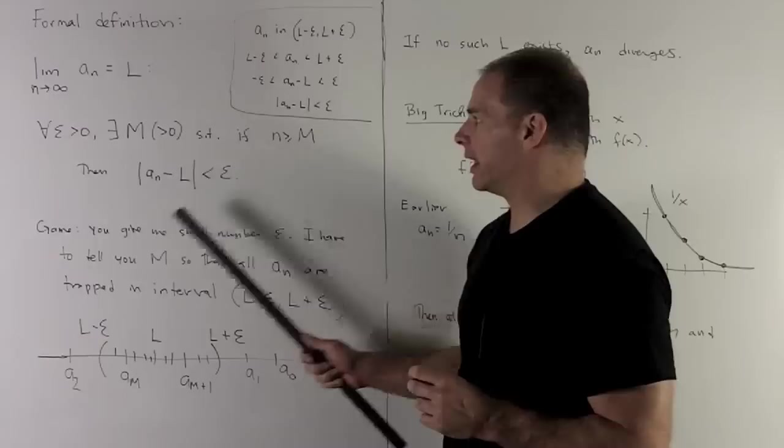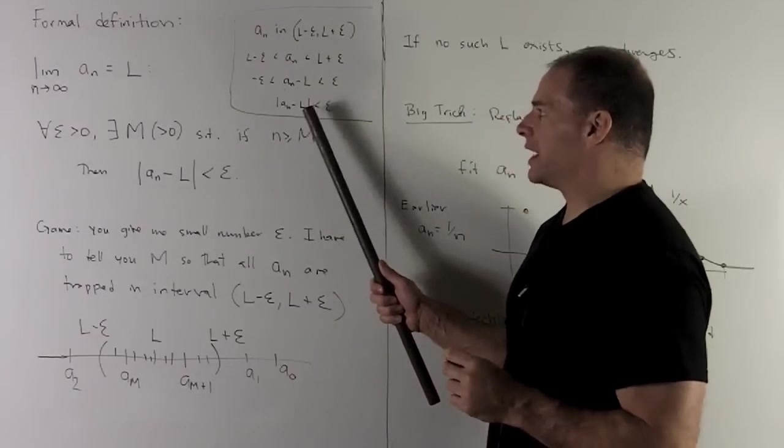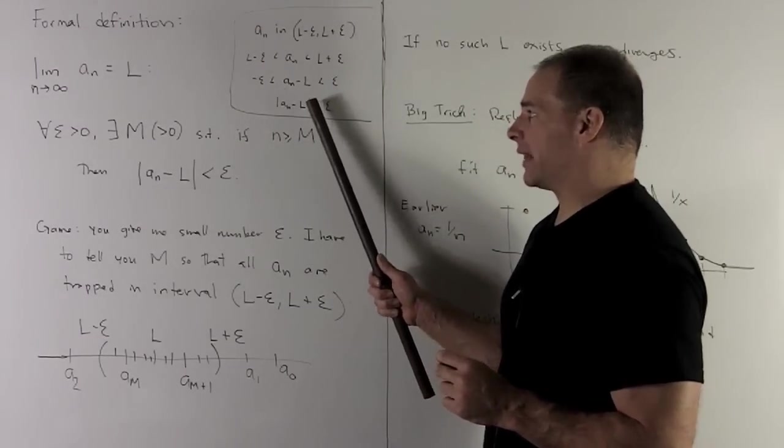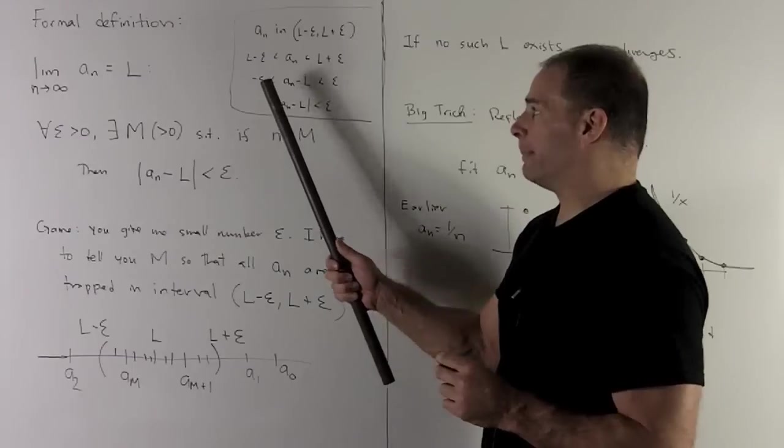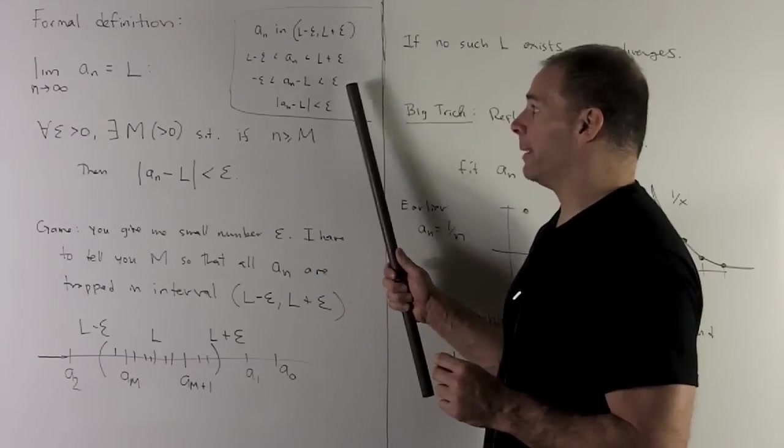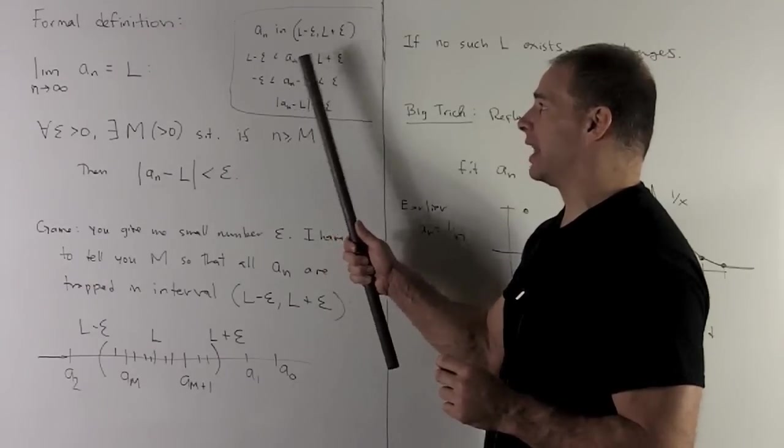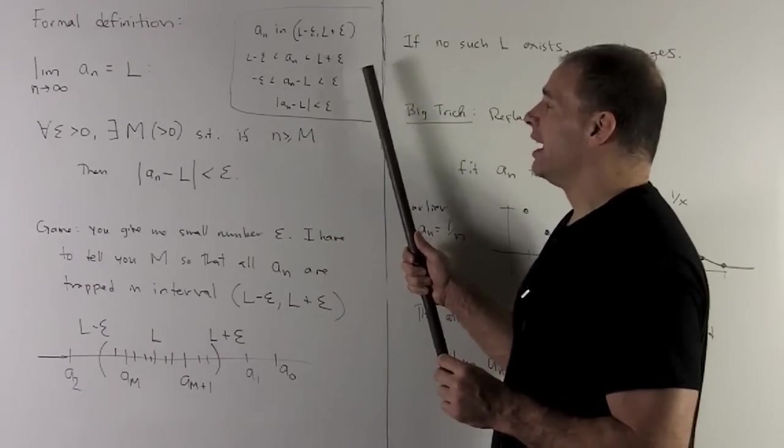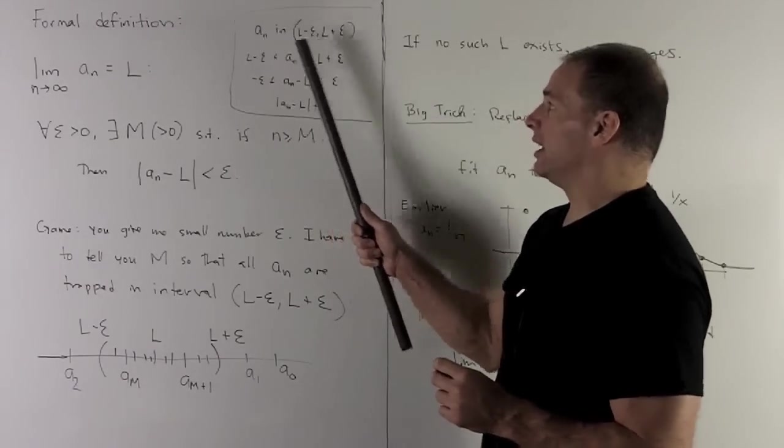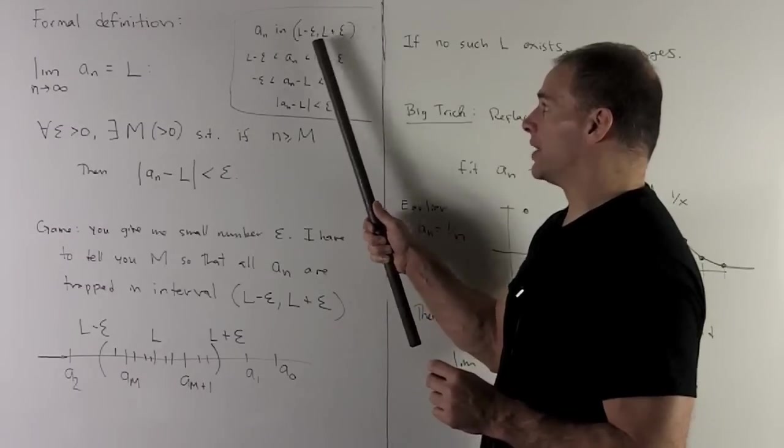How do we unspool that from this? Well, if I have a sub n minus L is less than epsilon, that's the same as saying that the thing in here is between minus epsilon and epsilon. I'm going to add L to each term. That gives me L minus epsilon less than a sub n, less than L plus epsilon.